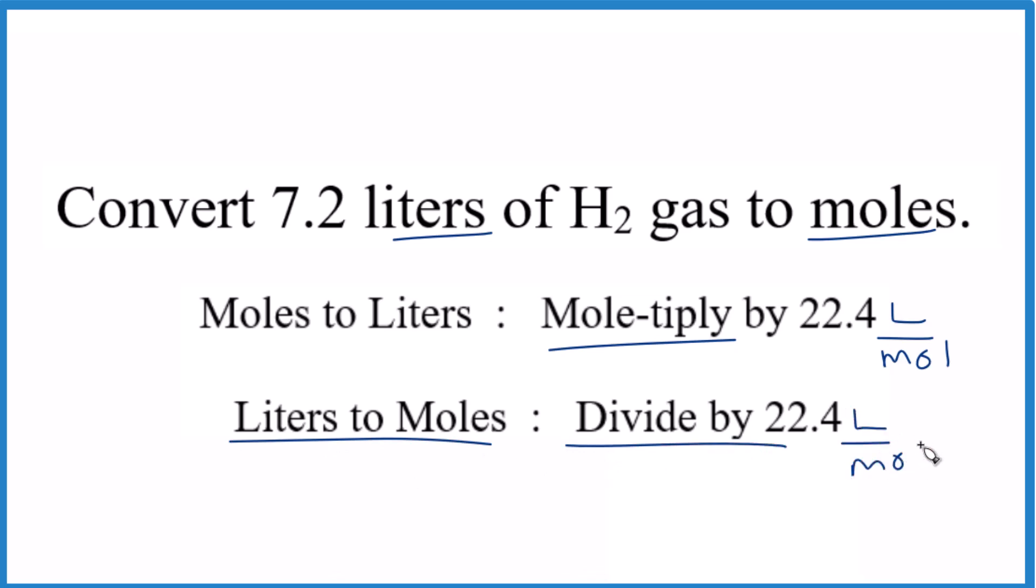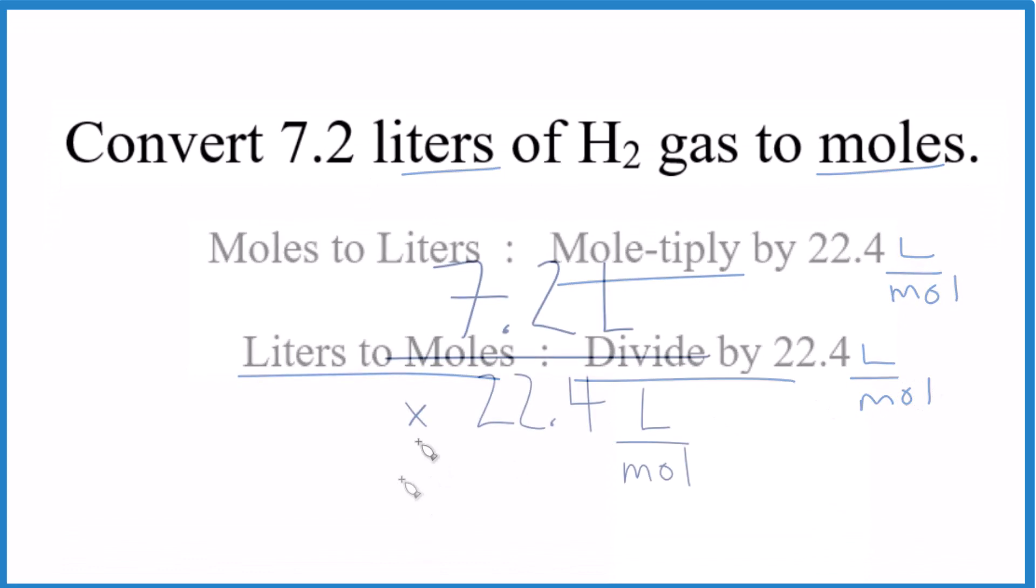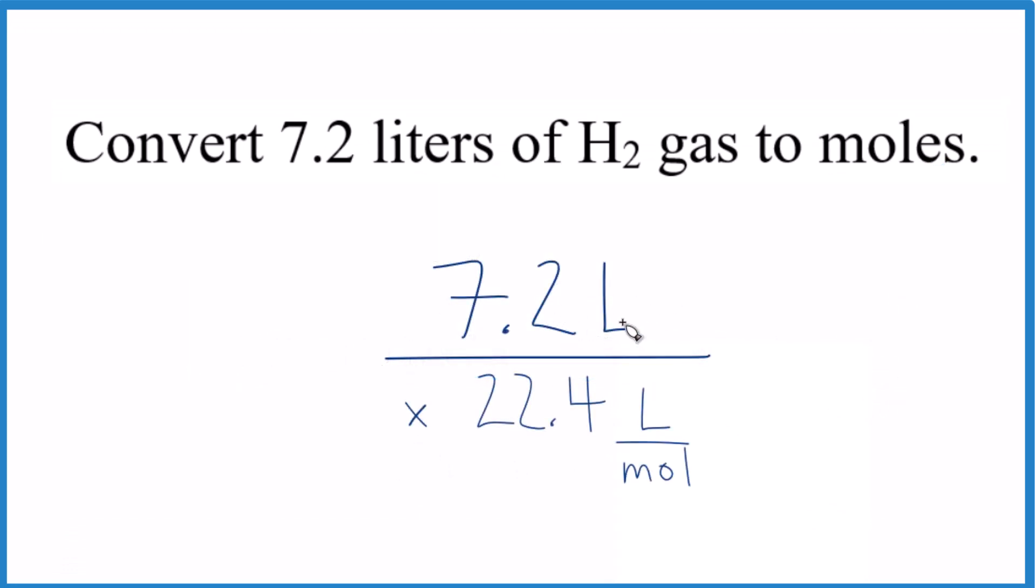We'll take the number given in the problem, 7.2 liters, divided by 22.4 liters per mole. You'll notice we have liters on top and on the bottom. They cancel out, and moles is left, so we'll be left with moles.